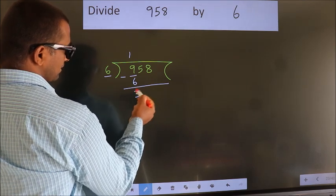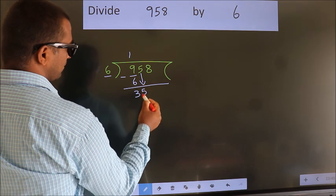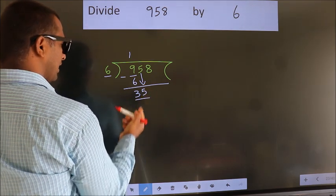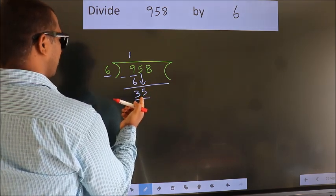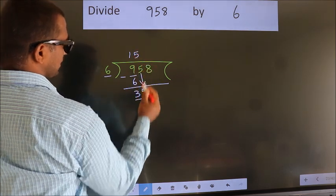After this, bring down the beside number. So 5 down. So 35. A number close to 35 in the 6 table is 6 fives 30.